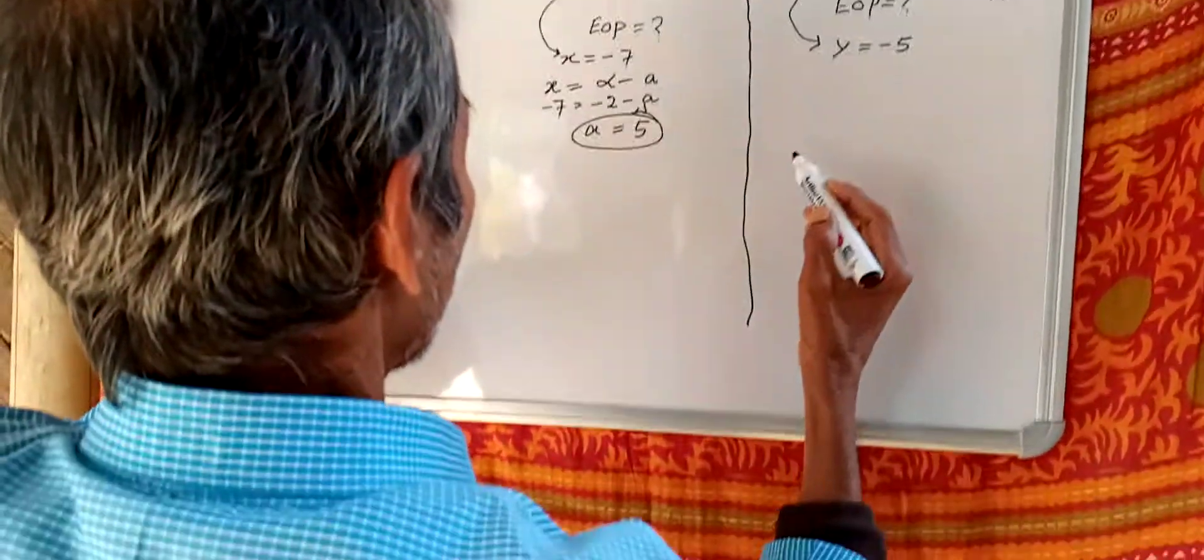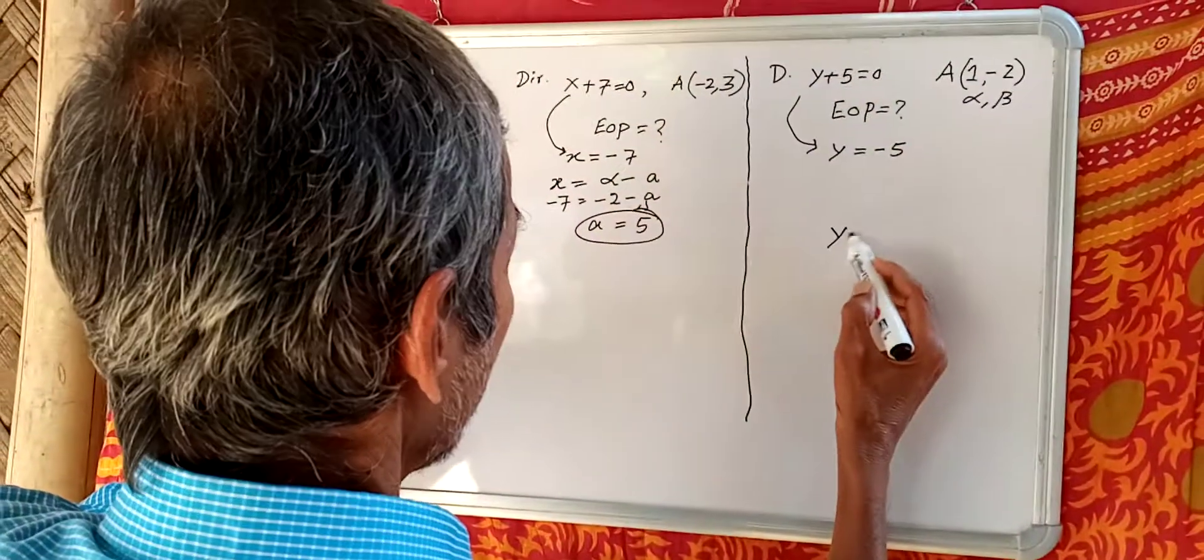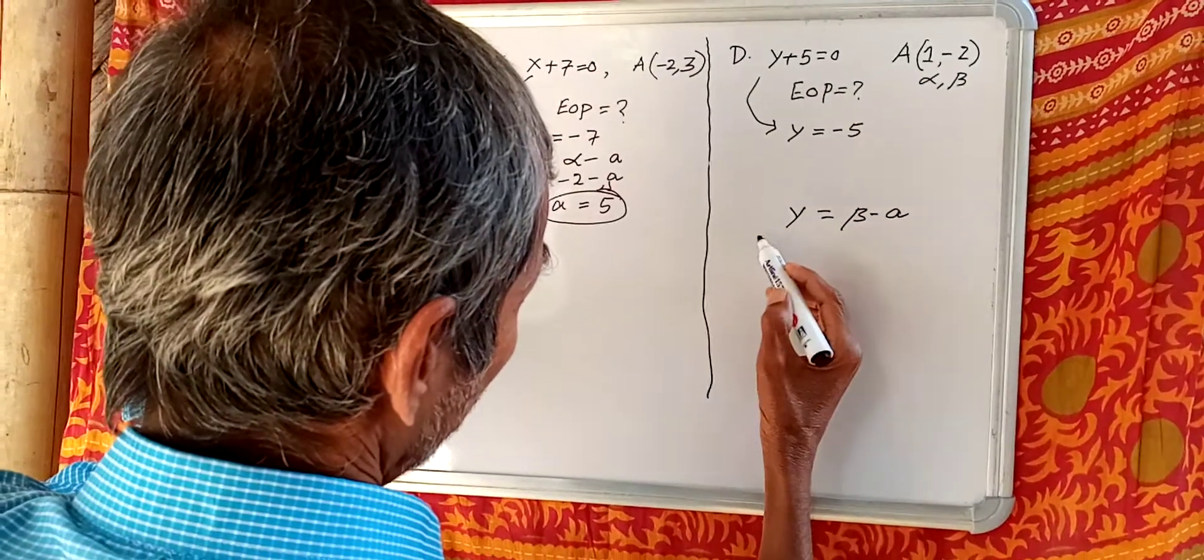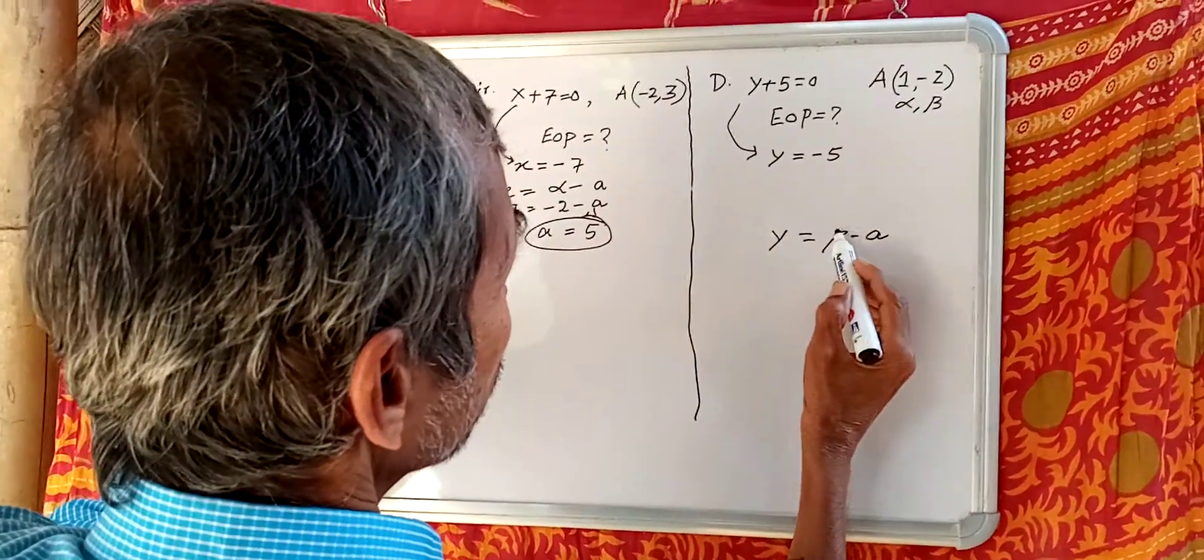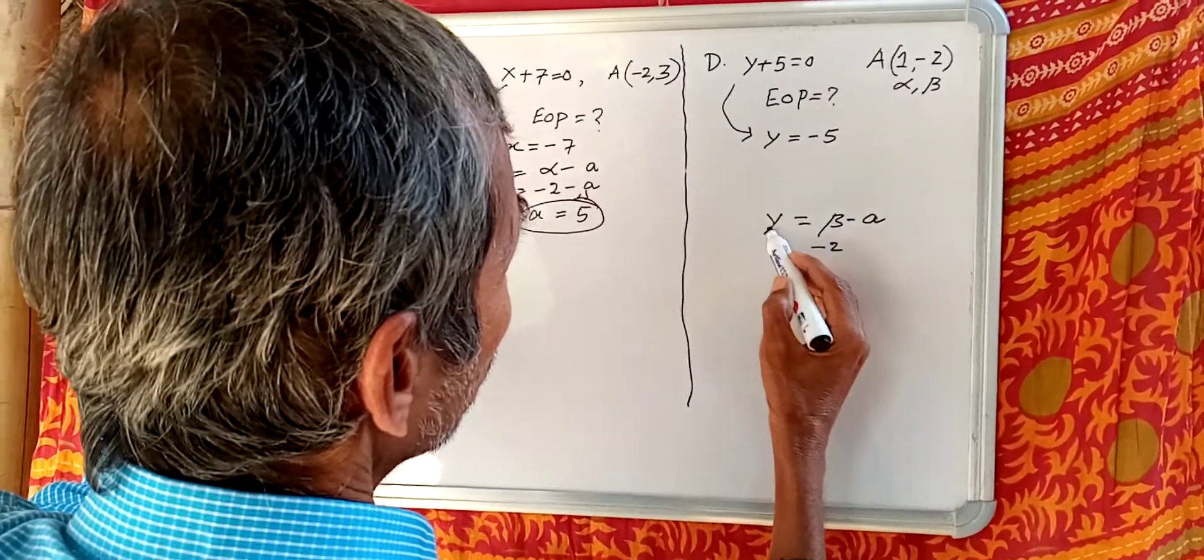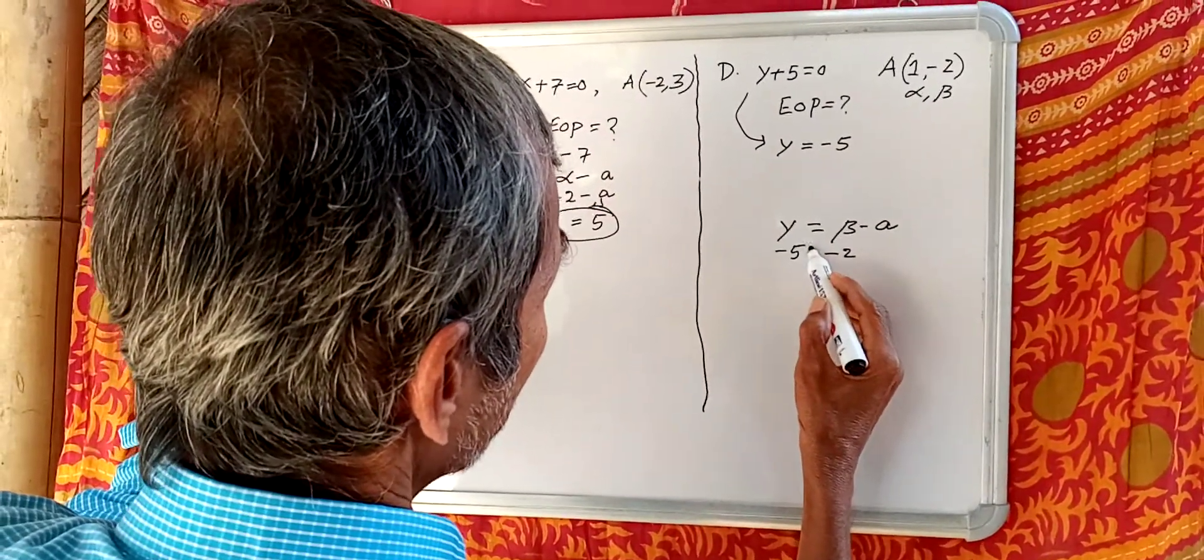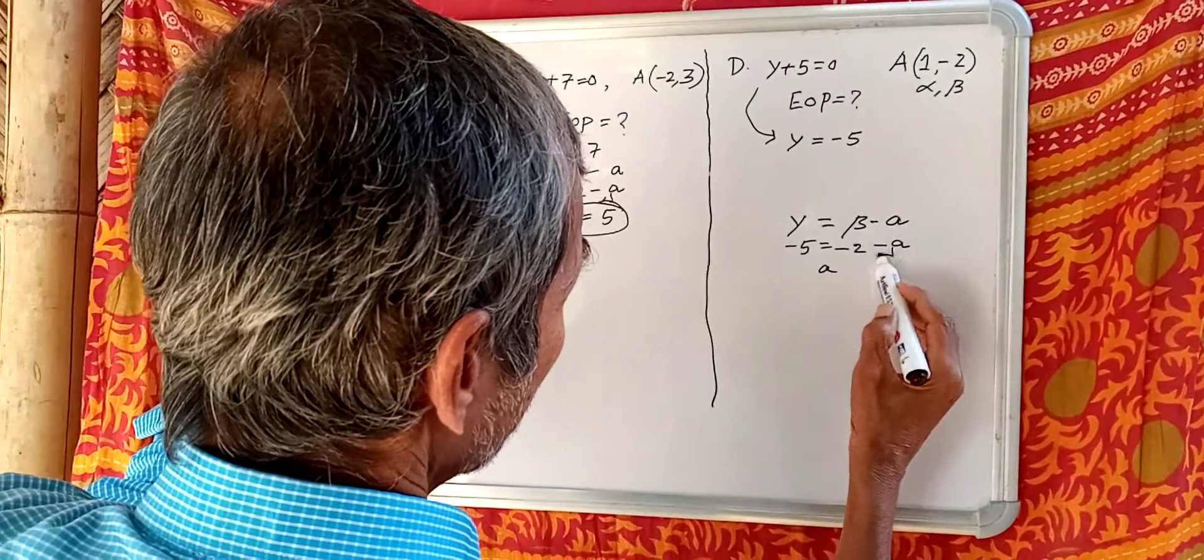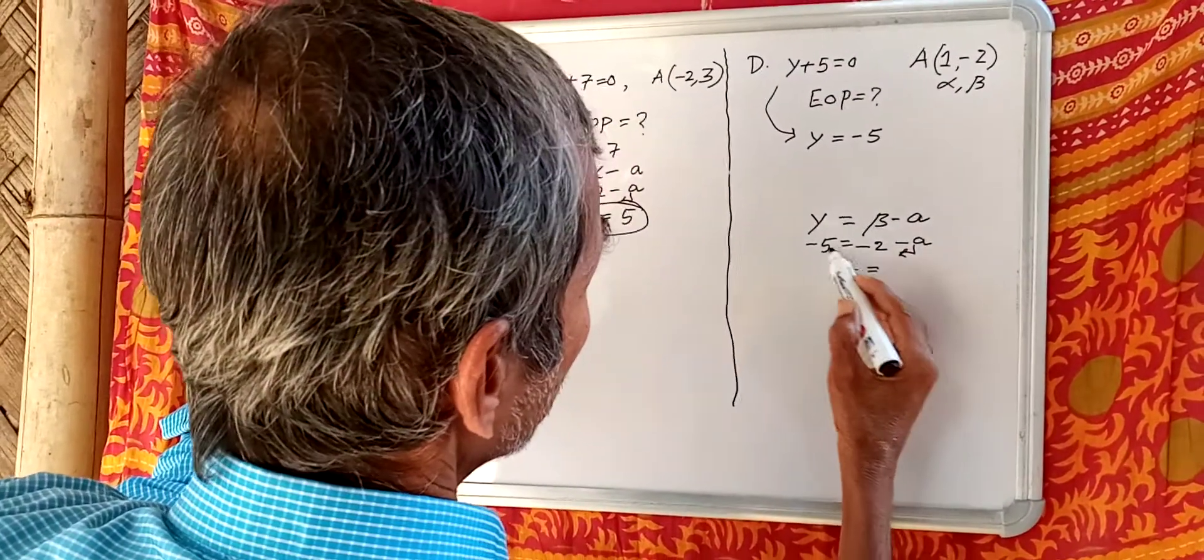Y equals beta minus A, therefore beta minus 2, Y minus 5 minus A. Therefore A equals 3.